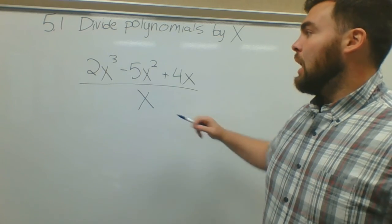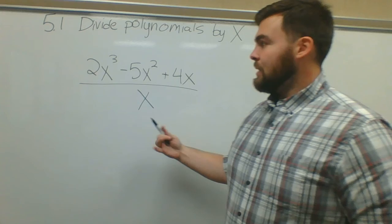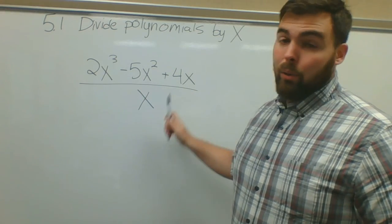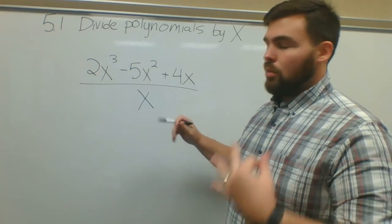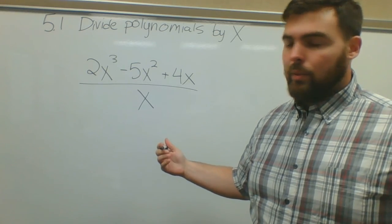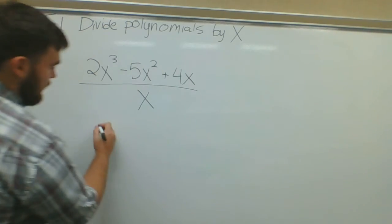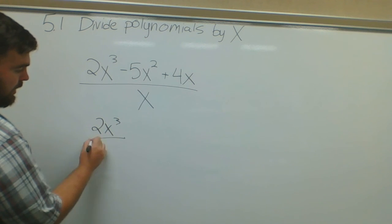It'll change up eventually. Basically what this means when you have several different terms in a numerator and only one term in the denominator, it's like three different divisions at once, right? So it's basically 2x to the third over x.